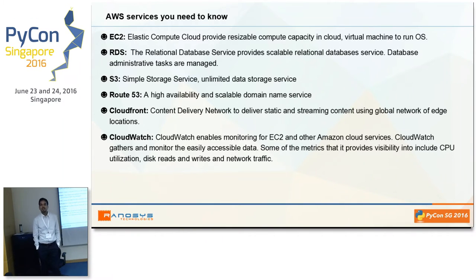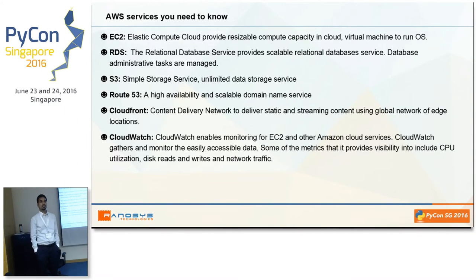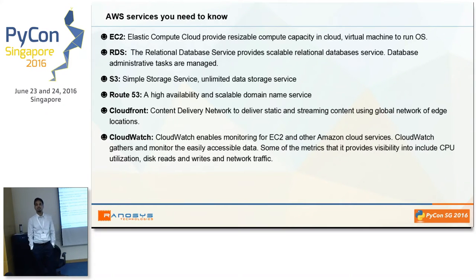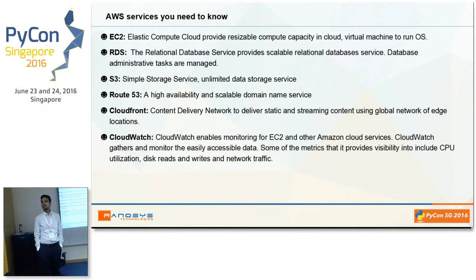CloudFront is built on top of S3. It is a content delivery network which you can use if you want your content — like media, images, or video — to download really fast on the user side. Using the CloudFront network, it will be delivered from the nearest location to the user's physical location.